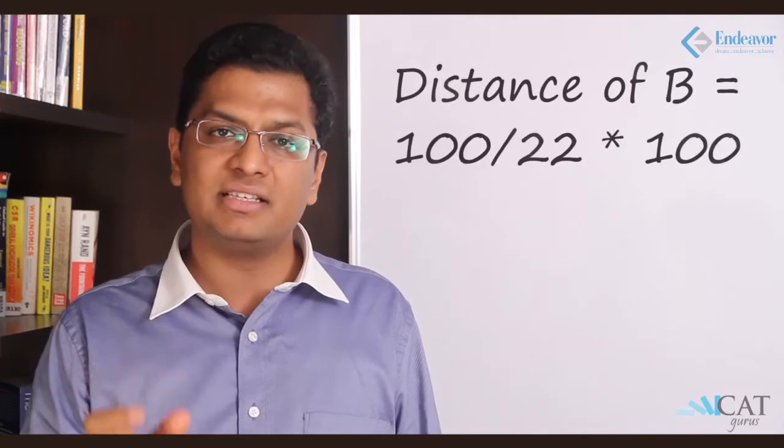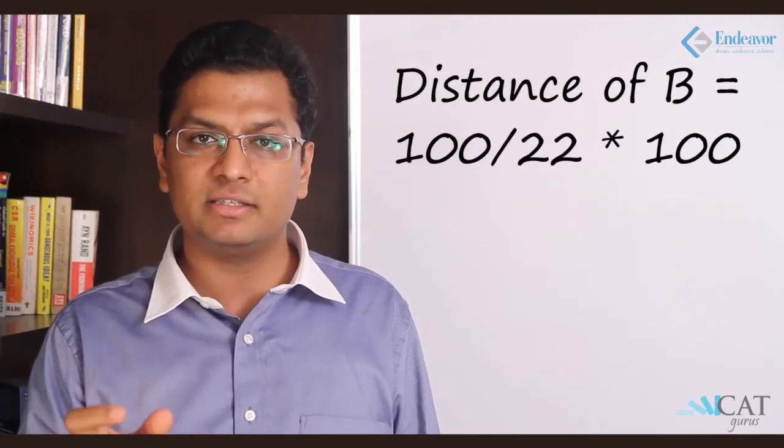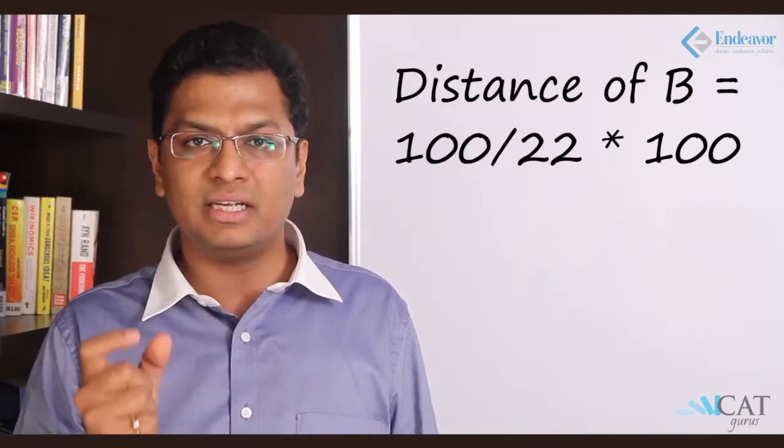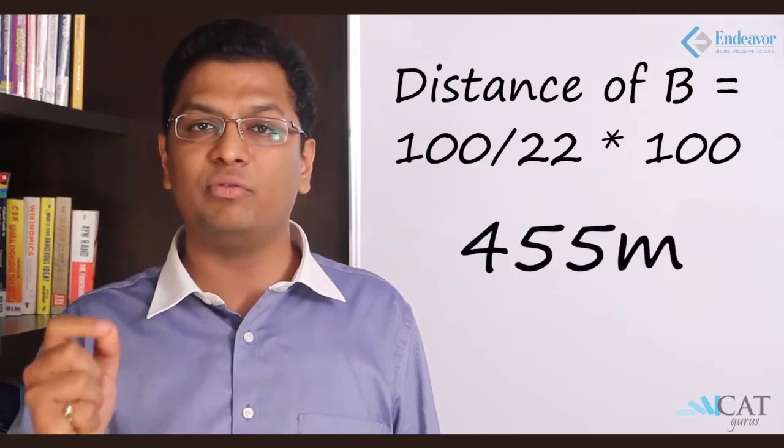Now how much time will A take to cover the 500 meter race? 500 divided by 5 which is 100 seconds. Now the difference of distance that B covers in 100 seconds and 500 meters will be the distance by which A wins. So how much distance does B cover in those 100 seconds? 100 into 100 by 22, that is the distance covered by B which comes to 455 meters.